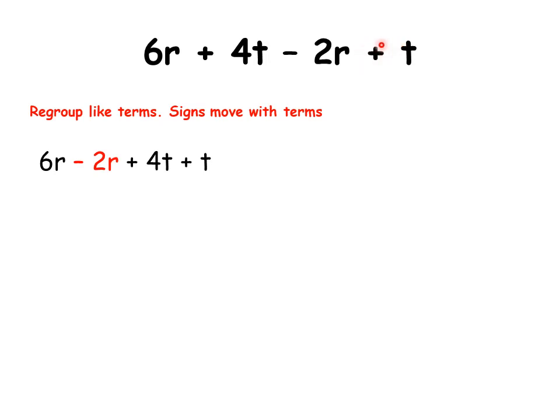So when we regroup, we have 6R minus 2R plus 4T plus T. And remember, once you see a variable standing by itself, it means the same thing as 1T. Or if the variable is R, it means the same thing as 1R. It doesn't really matter. So once a variable stands by its own, it's the same thing as saying 1 times the variable.